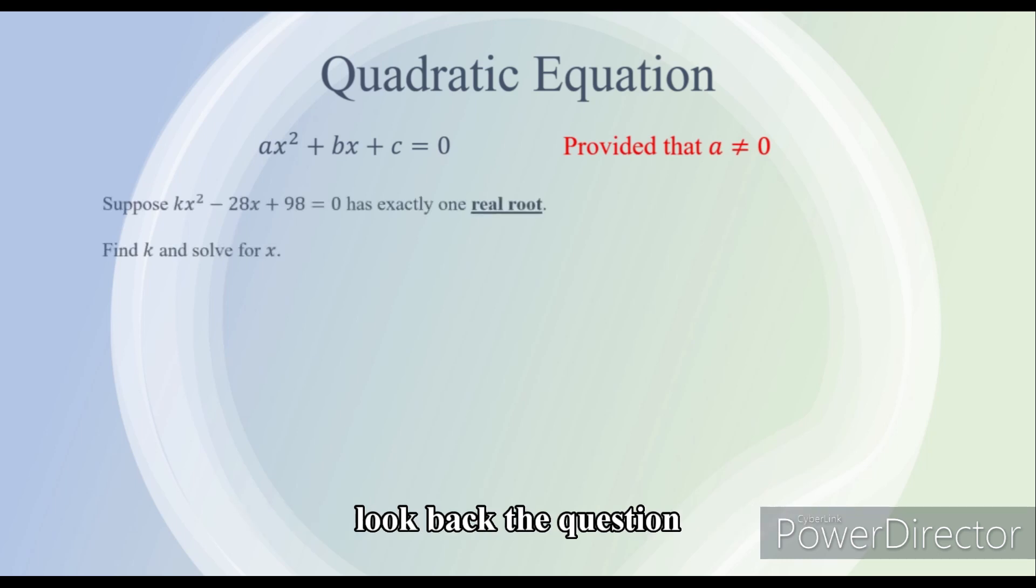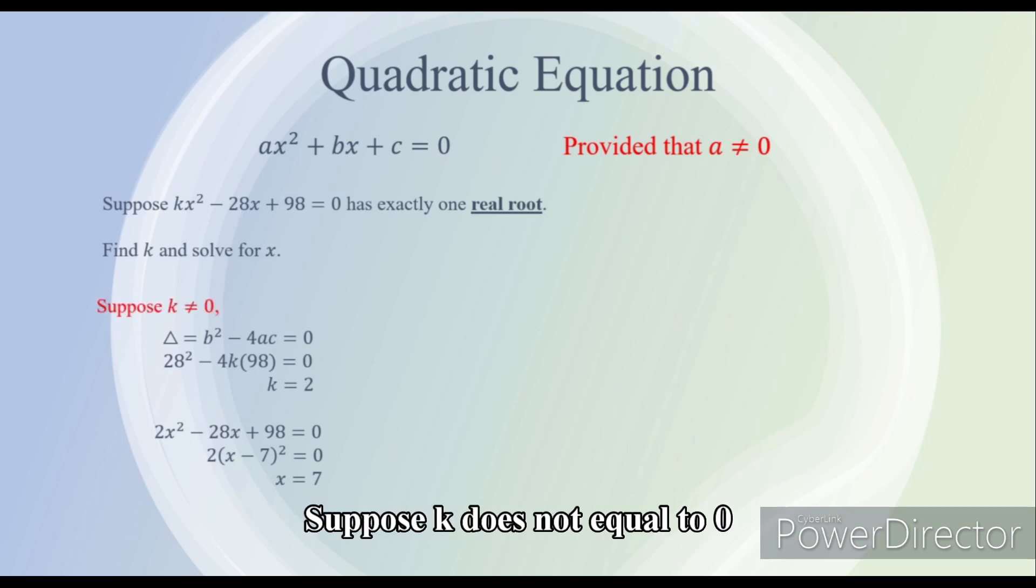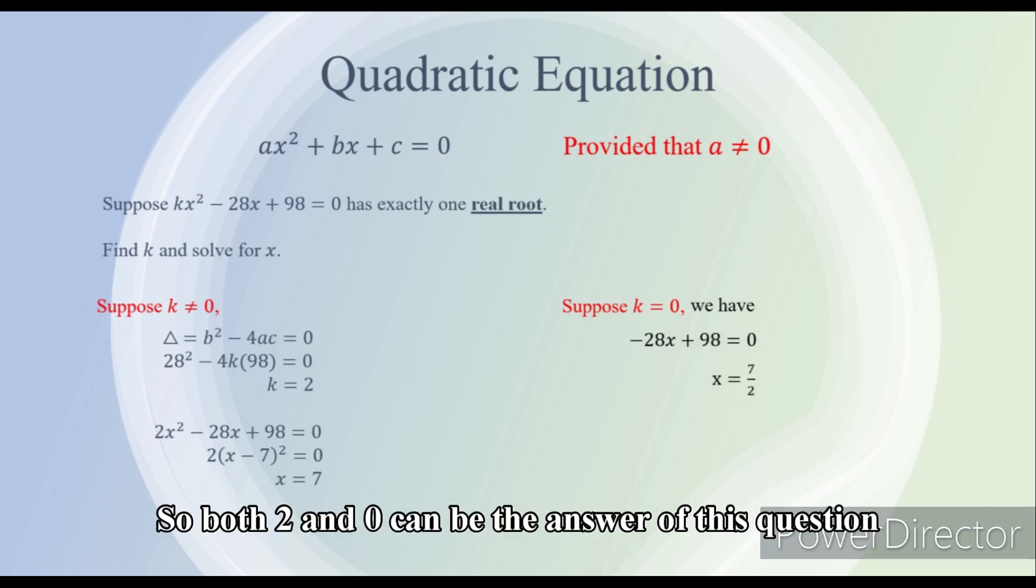Now look back the question. It didn't tell you it must be quadratic. See what we have done. We have supposed the equation to be quadratic, because we have computed the delta. So actually we are doing this: suppose k does not equal to zero. So what if k equals to zero? We have a linear equation that also yields exactly one real root. So both two and zero can be the answer of this question.